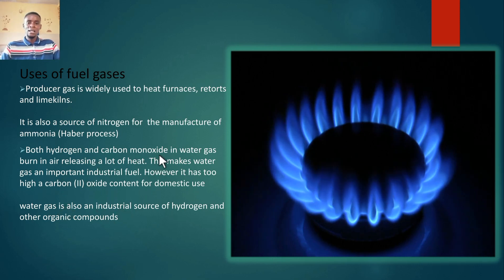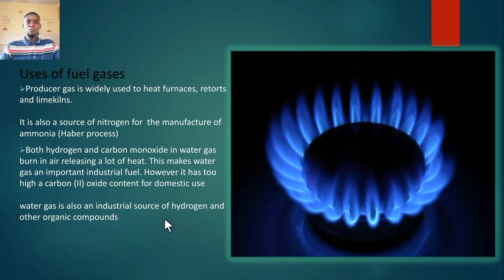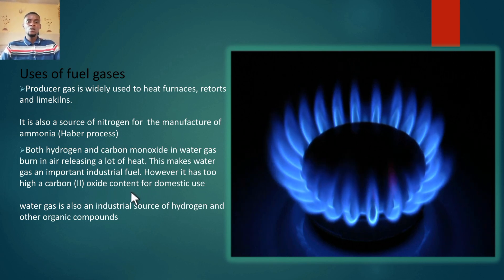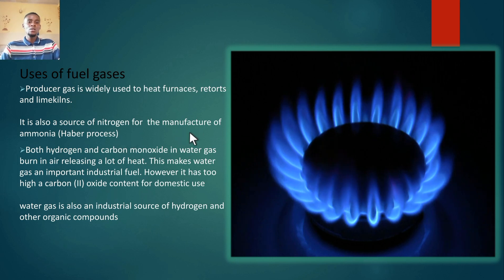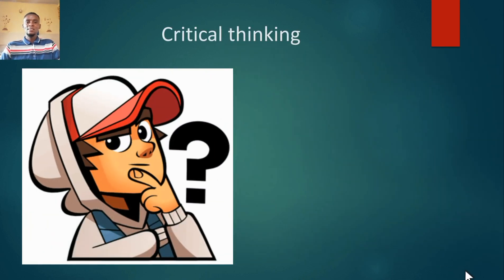For water gas: it contains hydrogen and carbon monoxide and is also used as an industrial fuel. However, it has too high a carbon monoxide content for domestic use. Water gas is also an important source of hydrogen and other organic compounds. In the Haber process, hydrogen and nitrogen react to produce ammonia, so water gas can be an important source of hydrogen, used with the nitrogen from producer gas to give us ammonia.